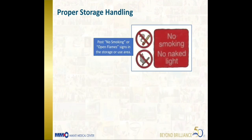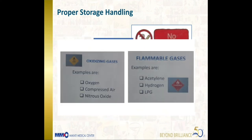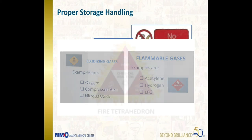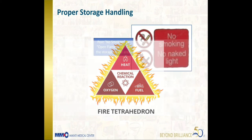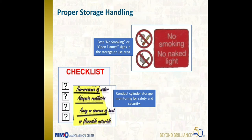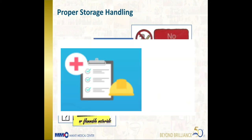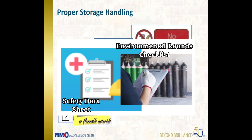Post no-smoking or open-flames signs in the storage or use area. Medical gases, especially oxidizing and flammable gases, are easily attracted to any sources of heat. Oxygen is one of the components a fire needs to ignite according to the fire triangle. Conduct cylinder storage monitoring for safety and security, and refer to the safety data sheet for information about the content, safety, and proper use of medical gas cylinders. Use environmental rounds checklists to check adherence to physical safety measures.